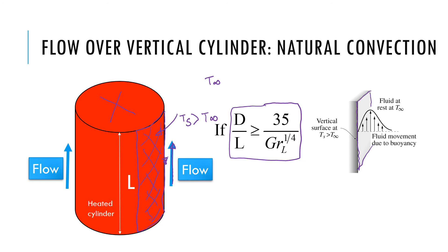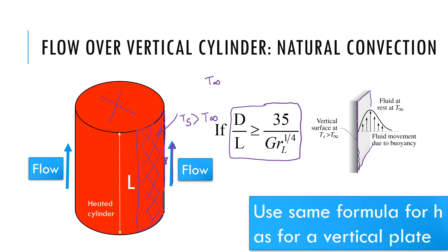This makes sense because the curvature effect becomes small when the diameter is large enough, and so we can reuse the formula for a plane vertical surface.